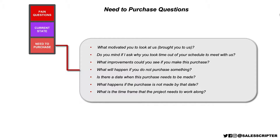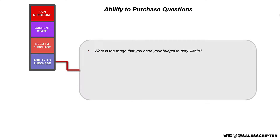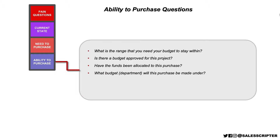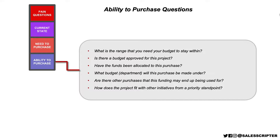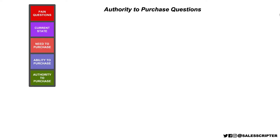What is the timeframe that the project needs to work along? For ability to purchase questions: What is the range that you need your budget to stay within? This helps identify how much money the prospect has to spend. Asking what range they need to stay within usually uncovers very valuable information. Is the budget approved for this project? Have the funds been allocated? What department is going to pay for this? Are there other purchases the funding might end up being used for? How does this project fit with other initiatives from a priority standpoint?